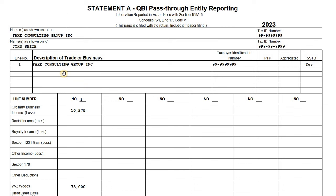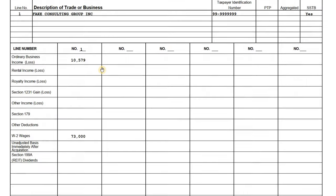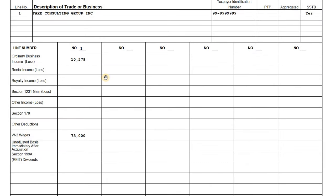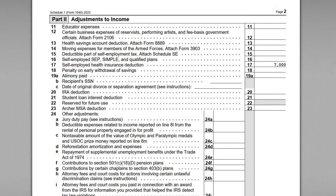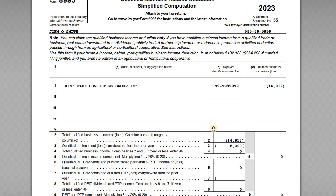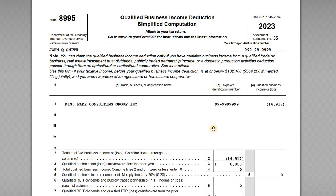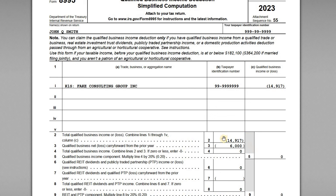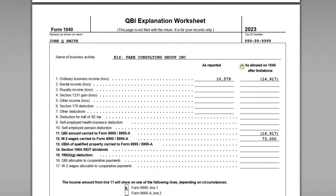For QBI — this is a consulting company, making it a specified service trade or business. The amounts of ordinary income allocated to John constitute qualified business income, along with the allocation of W-2 wages, generally reported on Form 8995. However, John had to account for the free-up of those prior year losses as well: he had a $6,000 carryover, and the QBI amount netted to negative $14,917 for the year. The $10,579 reported in the current period, adjusted for the prior year losses freed up, gives an adjusted QBI amount of negative $14,917.